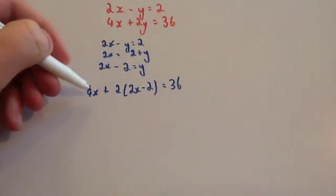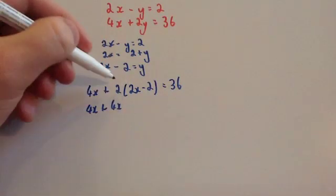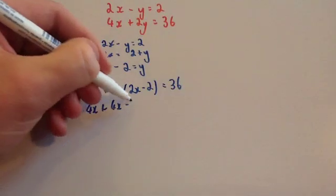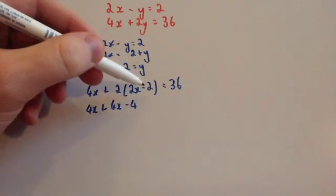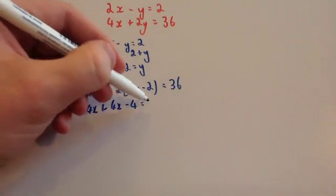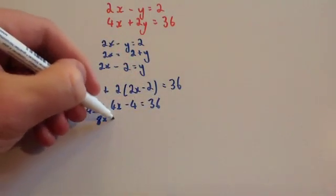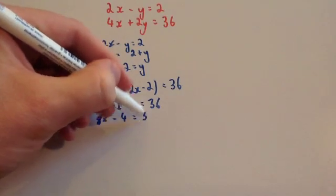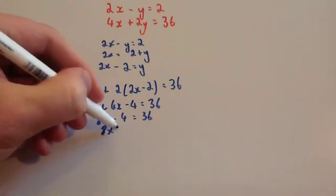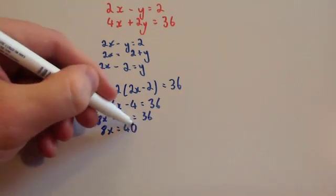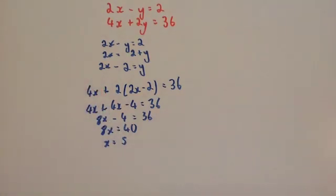Expanding the brackets: 2 times 2x gives 4x, and 2 times minus 2 is minus 4. So we get 4x plus 4x minus 4 equals 36. Adding the 4x terms gives 8x minus 4 equals 36. Adding 4 to both sides gives 8x equals 40, so dividing by 8 gives x equals 5.